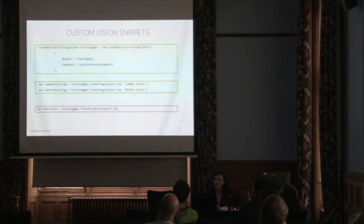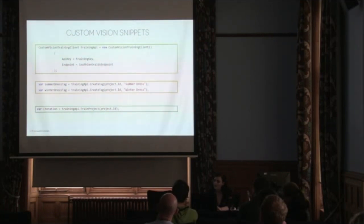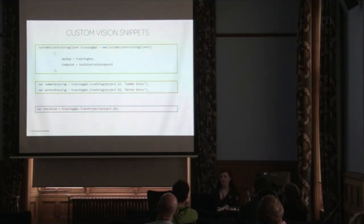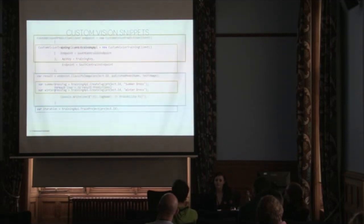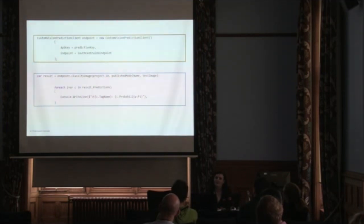Here I just have a couple of code snippets. We create a Custom Vision training client called training API — that's just the API and the base URL that Azure provides when you create your resource group. Then you create tags — the summer dress tag and the winter dress tag — and assign those tags to images in your local file system, which are then uploaded to Azure. Those images are tagged by their file names, so the file name will have 'summer dress' or 'winter dress' and that's how they're trained. To get back the response, we go to the custom prediction endpoint, get back the JSON response, and then I just had a simple console write line of whether or not it's a winter dress or a summer dress.